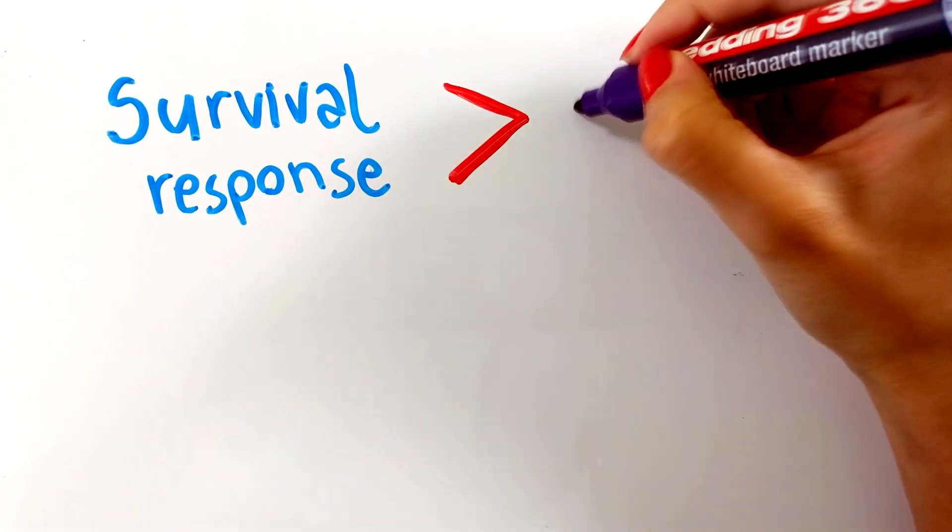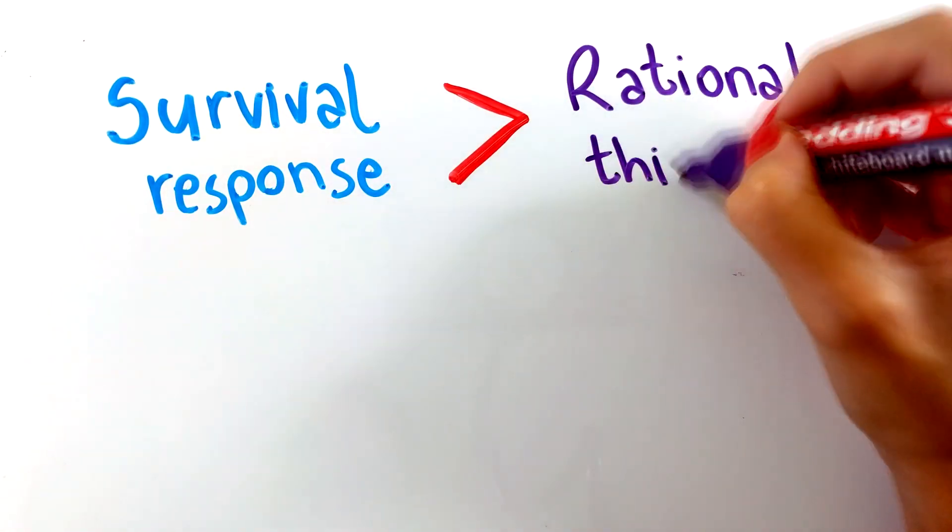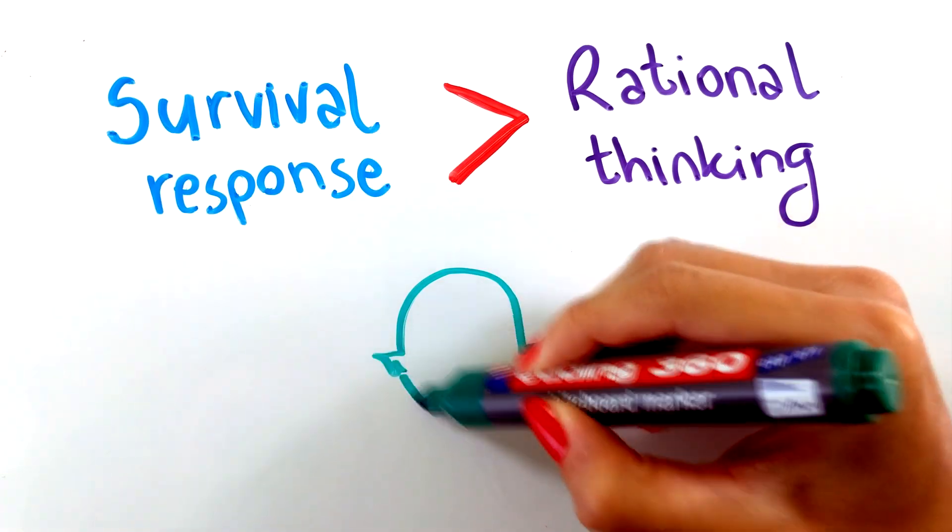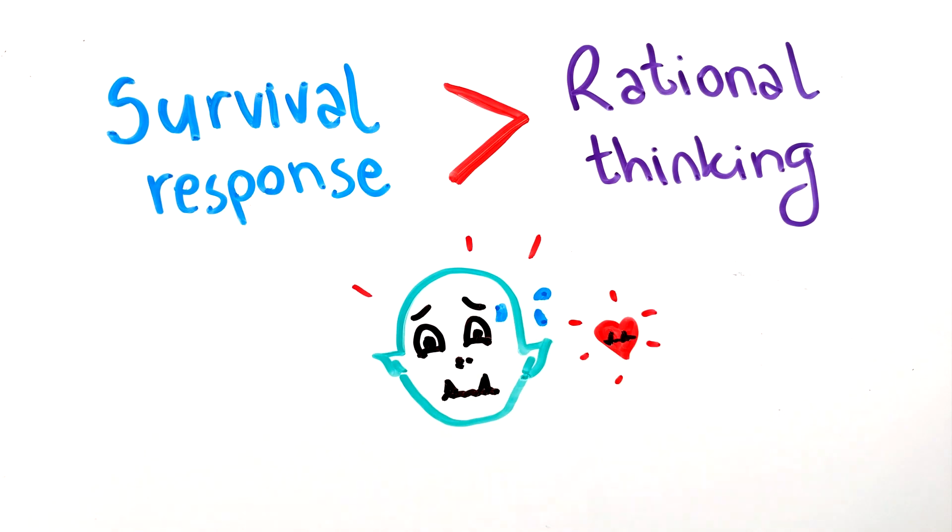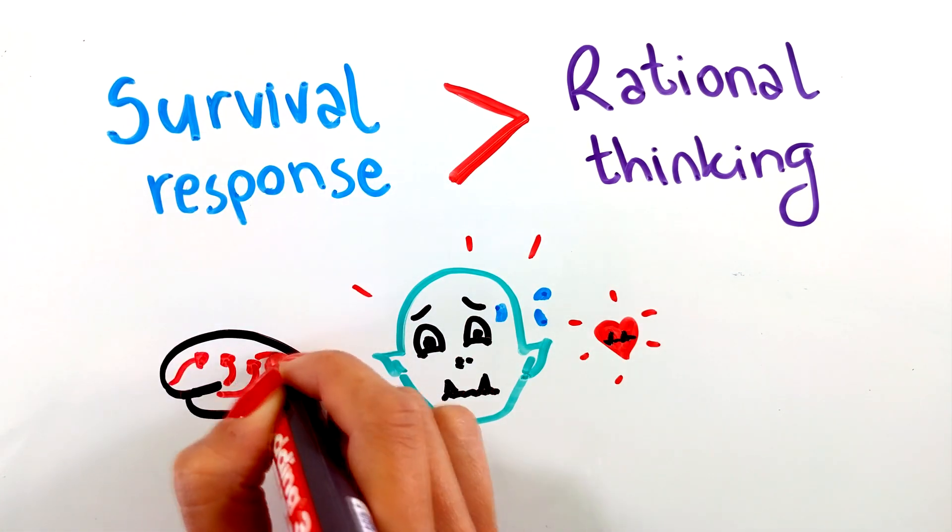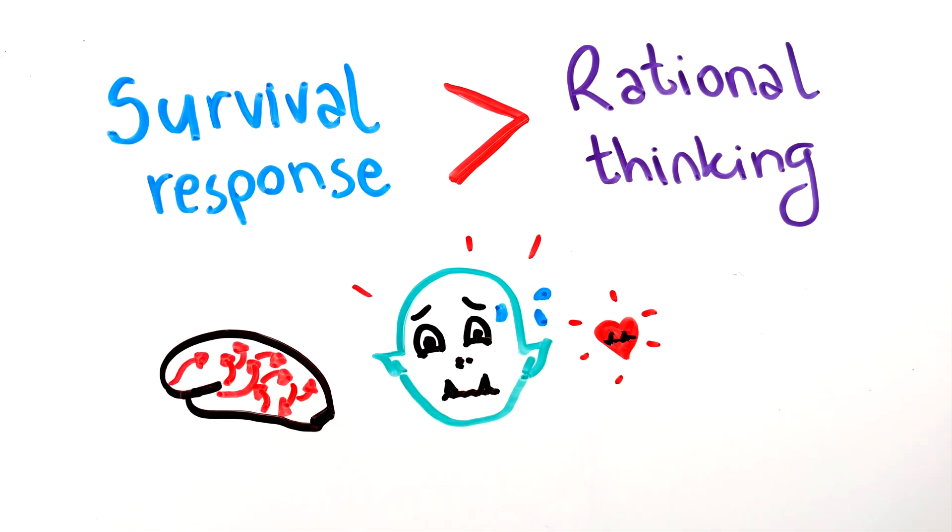As our survival response is very fast, leaving no time for logic to come in. As a result we are unable to think rationally and you feel flooded with emotions. But next time this happens remember that it is just the way your brain is wired, shaped by evolution for thousands of years in order to keep us alive.